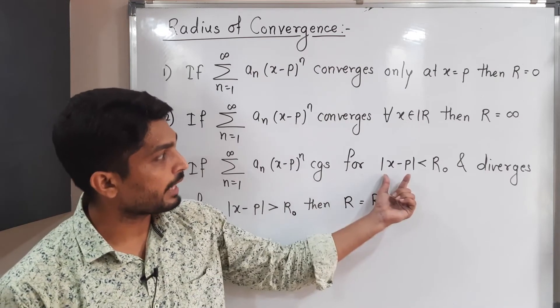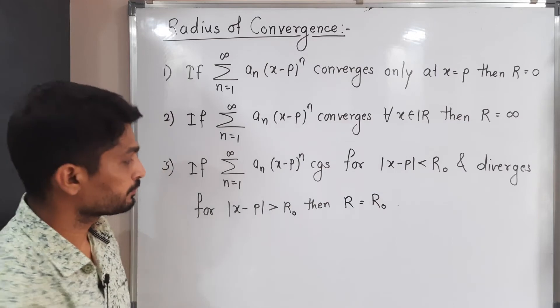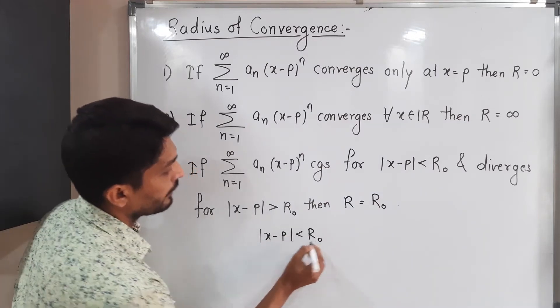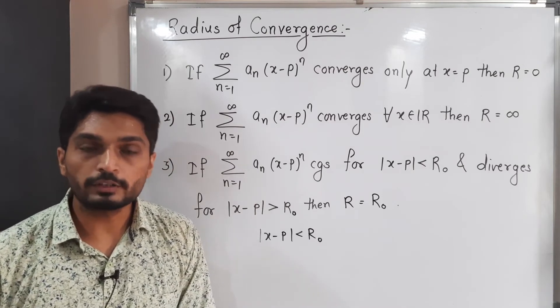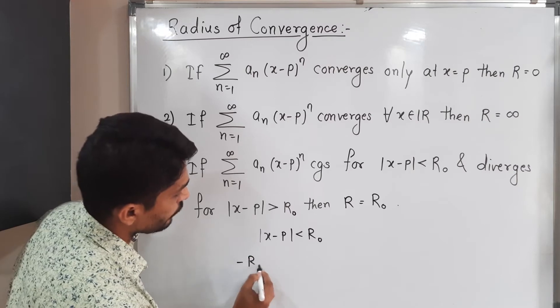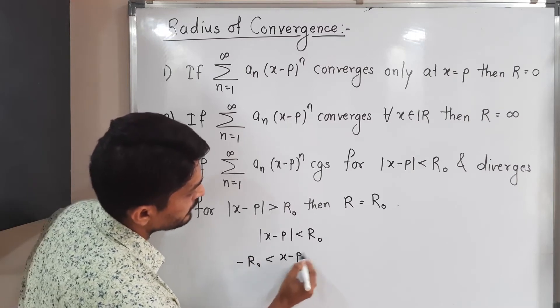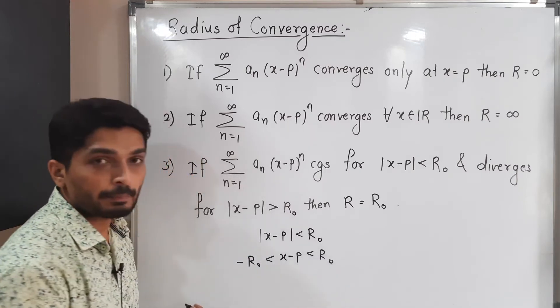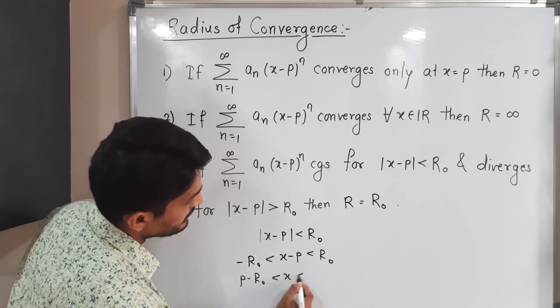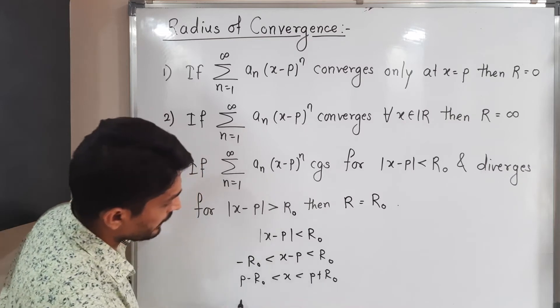Let us discuss what will happen if you solve this completely. What we have |x-p| < R_0. So some results of inequality we have already discussed. Let us apply one of the result here. So -R_0 < x-p < R_0. We can add p in all sides. So therefore p-R_0 < x < p+R_0.